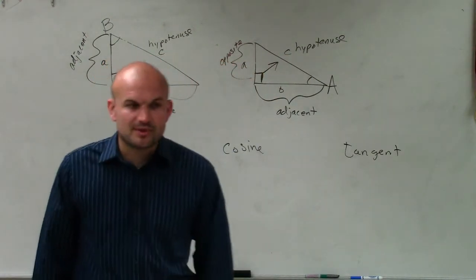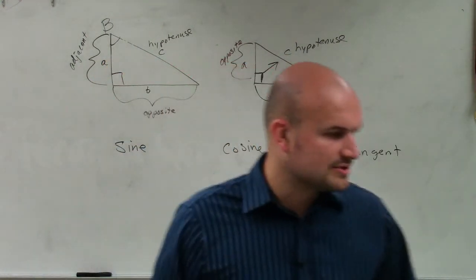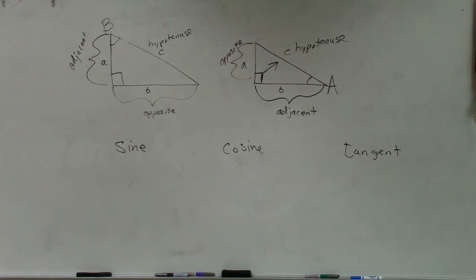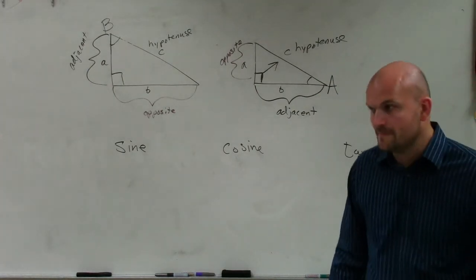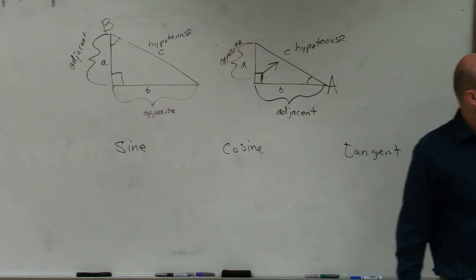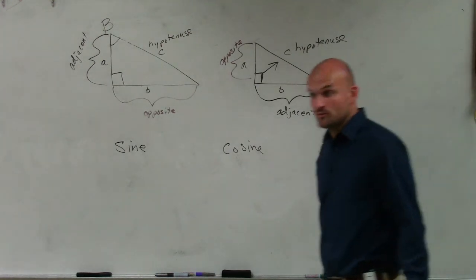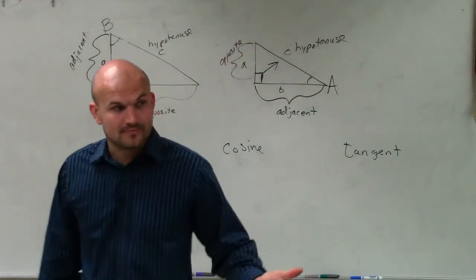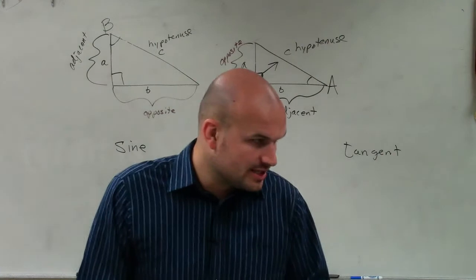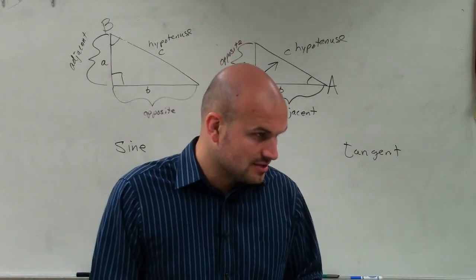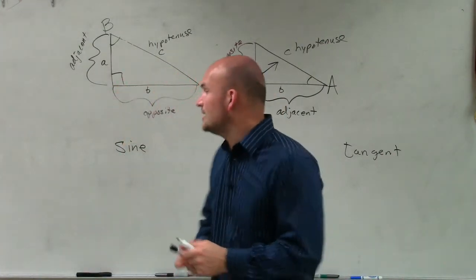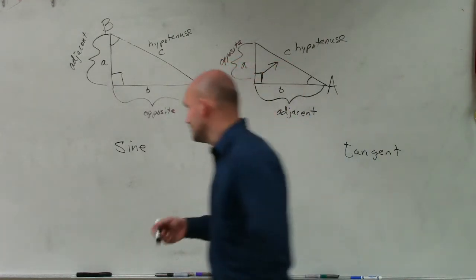All right. Now, these three functions are what's really important for you guys to understand. These are going to be functions of an angle. And the function of an angle represents a ratio, which we talked about in unit 7. So the function of one of these angles is going to represent a ratio. So let's kind of go over an example here.